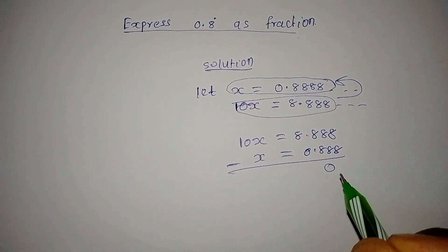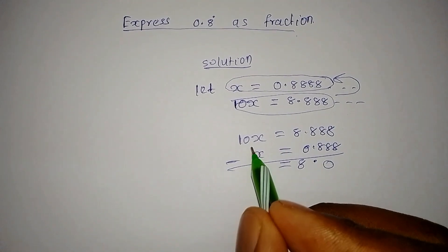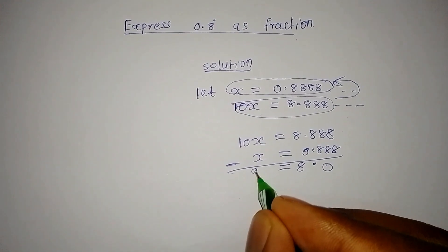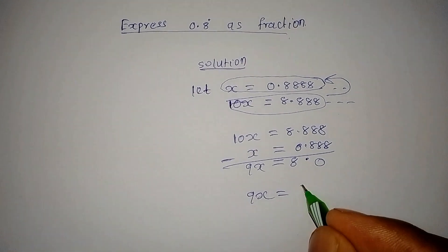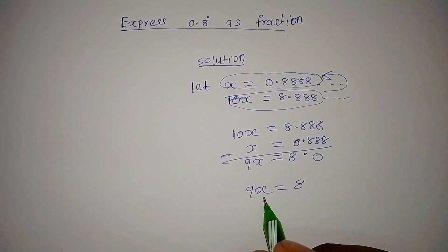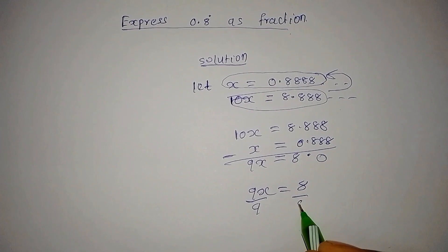On this side, you get 0. Eight minus 0 is 8. Then 10x minus x gives 9x. So 9x equals 8. To make x the subject, divide both sides by 9.